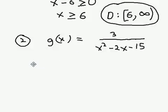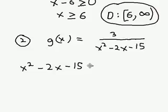So to find out what x can't be, set the denominator equal to 0 and solve. x squared minus 2x minus 15 equals 0.